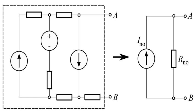Any linear electrical network with voltage and current sources and only resistances can be replaced at terminals AB by an equivalent current source ENO in parallel connection with an equivalent resistance RNO.